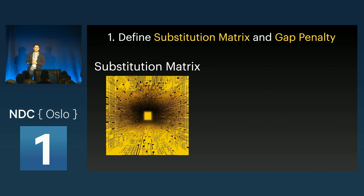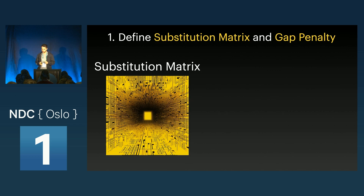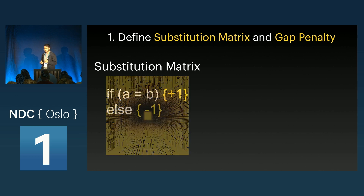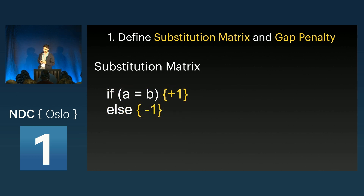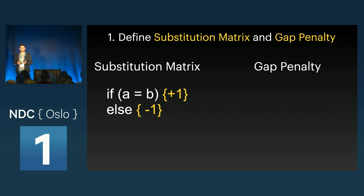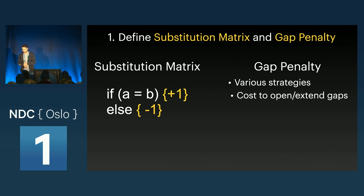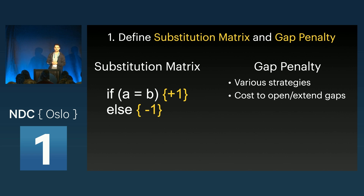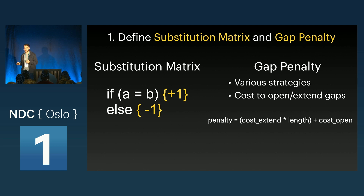The substitution matrix can be complex and is used to give a score to matches and mismatches between characters, but it can also be something really simple, which we'll be using in this talk. The gap penalty involves various strategies revolving around the cost to open and extend gaps — it can factor in the length of the gap and the cost to open the gap in the first place.